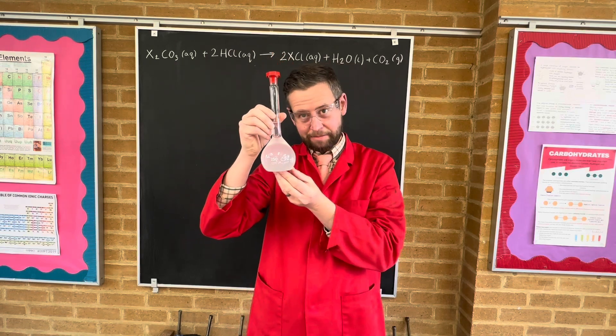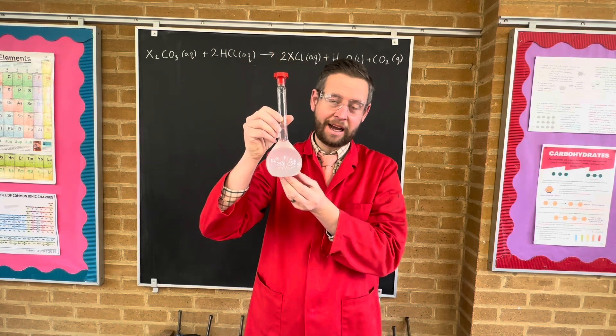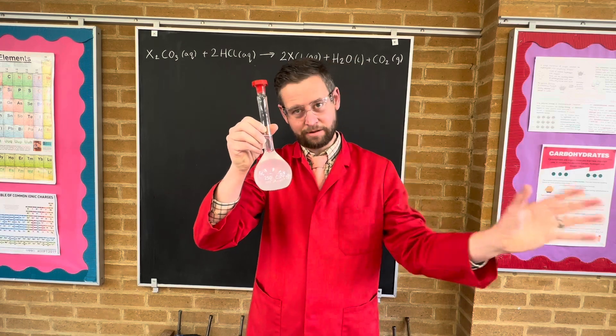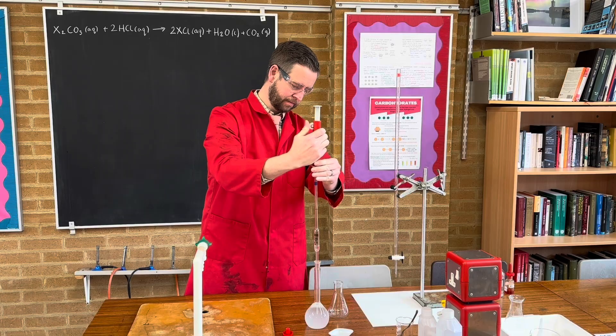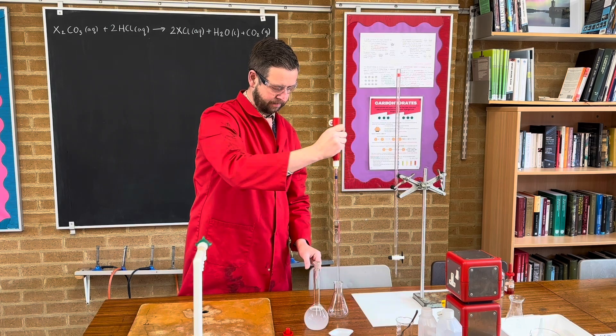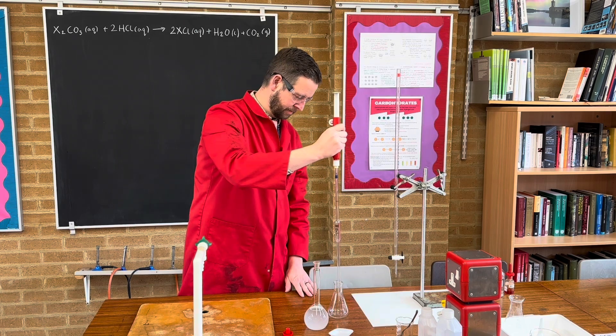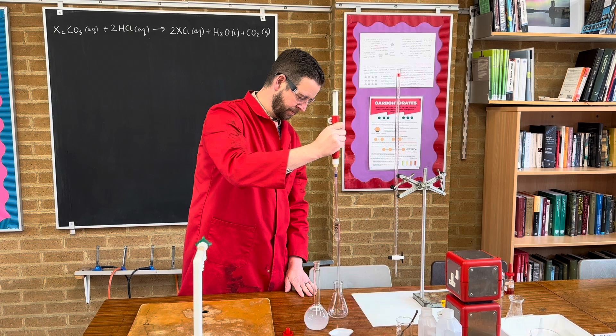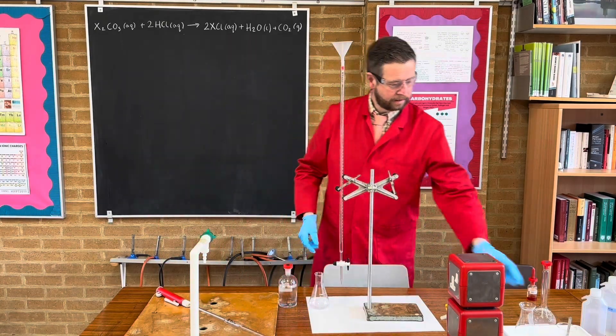We're going to take 25 milliliters of this and now add it to a conical flask to go underneath.